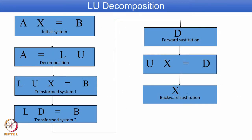The procedure for LU decomposition and solution is given in this flowchart. Given the coefficient matrix equation Ax = b, the coefficient matrix A is decomposed as the product of L and U. We rewrite the equation as LUx = b, then substitute Ux = d, so the equation becomes Ld = b. Solving this equation gives d by forward substitution.